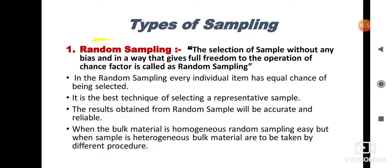The definition of random sampling: the selection of a sample without any bias and in a way that gives full freedom to the operation of the chance factor is called random sampling.